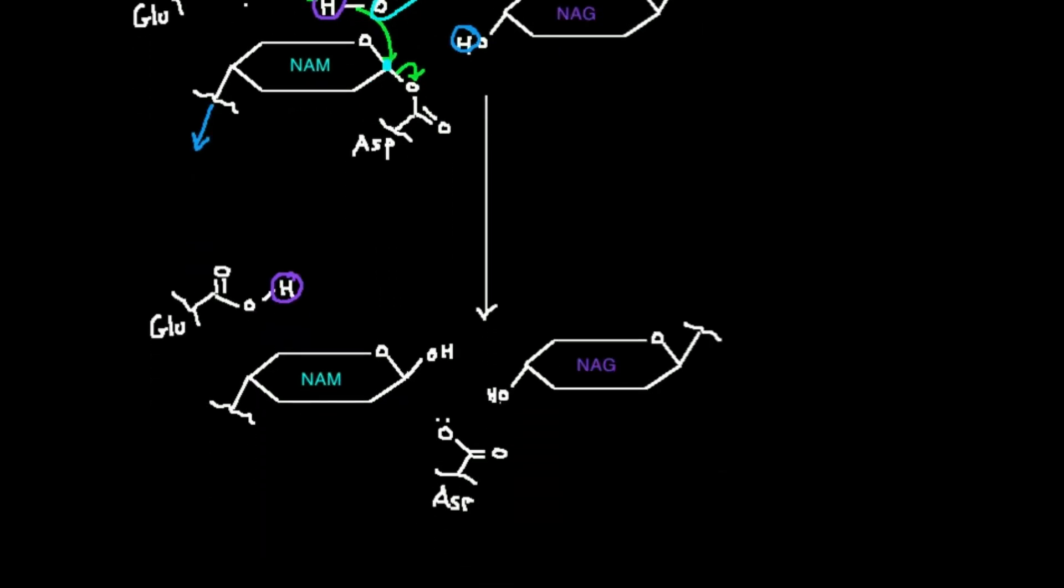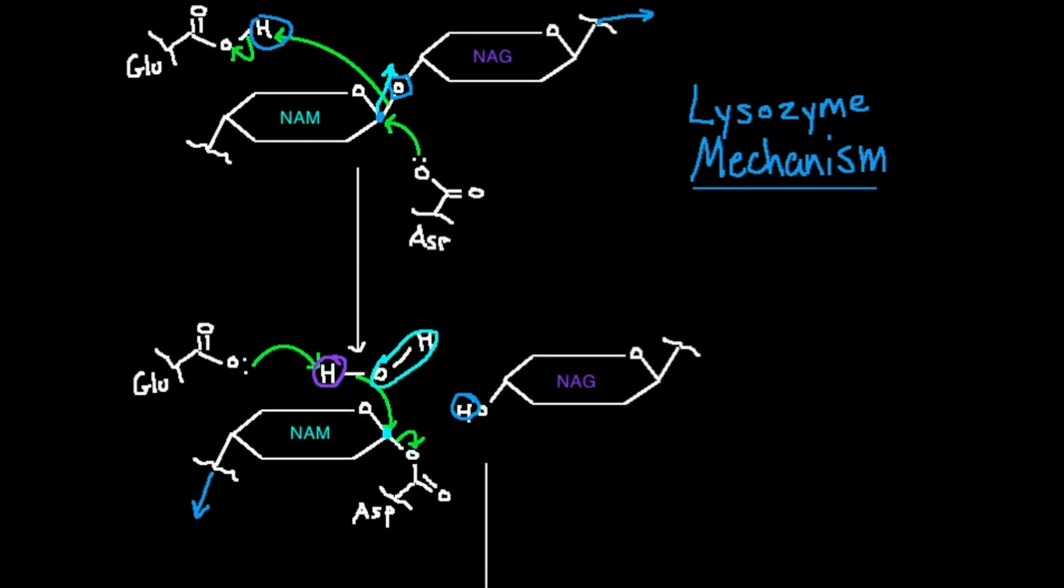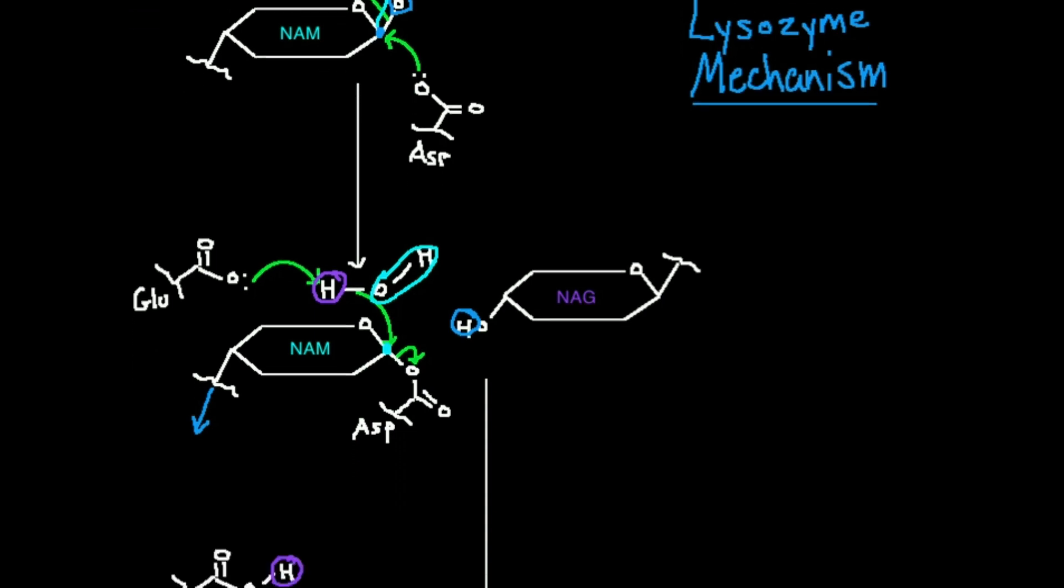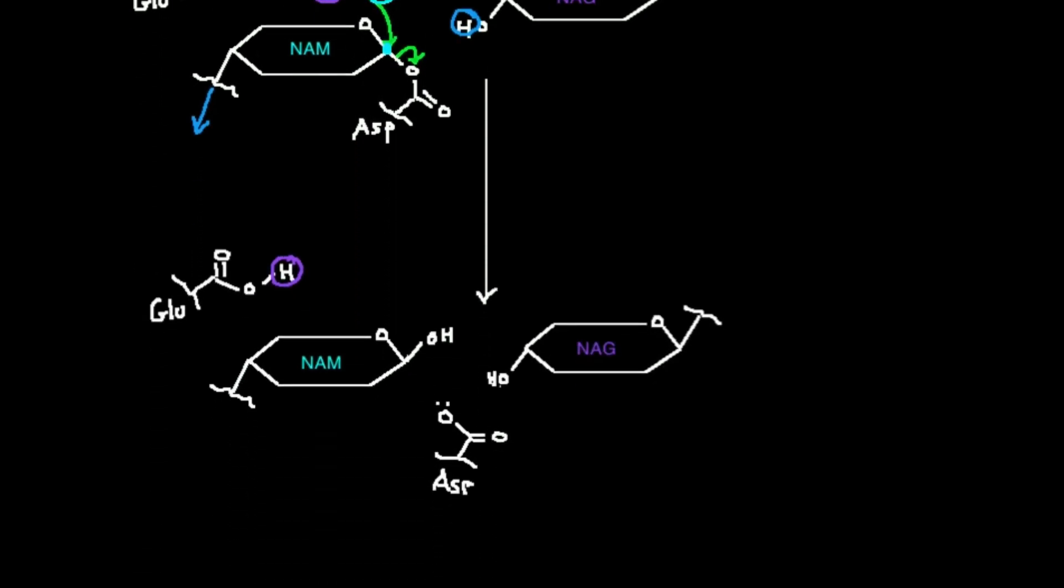But that's the basics of the mechanism. So what's our net effect? We start with a NAM-NAG bond, and this enzyme can attack usually anywhere in the carbohydrate polymer. We do a couple successive SN2 reactions, and we get a free NAM and a free NAG. And what we effectively do is we split the NAM-NAG bond.